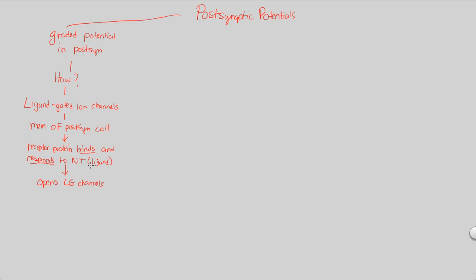Once you have the correct key fit the correct lock, the channel will open. When this channel opens, imagine a regular neuron environment where the outside has positive or negative ions. When those ligand-gated channels open, whatever ions are maintaining the membrane potential will diffuse across the postsynaptic membrane through that newly opened channel, because the neurotransmitter has bound and caused the channel to open.